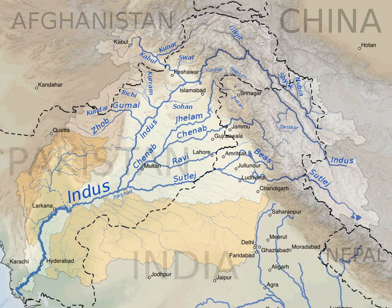The treaty is considered one of the most successful water-sharing endeavors in the world today, even though analysts acknowledge the need to update certain technical specifications and expand the scope to include climate change. As per the treaty provisions, India can use nearly 20% of the total water carried by the Indus system of rivers — excluding domestic, industrial, and non-consumptive uses from western rivers — while Pakistan can use the remaining.